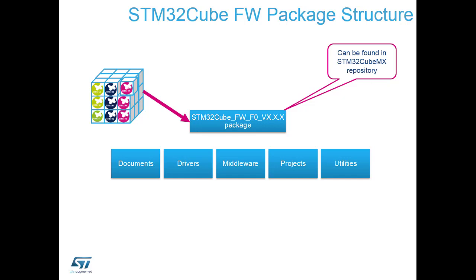There's also an Applications folder at the example level. These examples use elements of the middlewares, showing how to use FreeRTOS, USB in virtual COM port, HID, and mass storage device modes. All this code is free for you to use — the examples should be ready-made standalone projects to get you up and running with the libraries, whether HAL or low layer. Not all examples are available in low layer, but there are no licence constraints for recycling any of these examples.